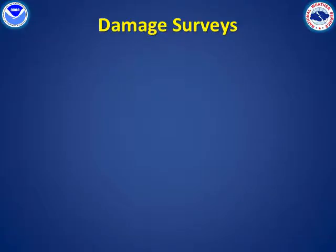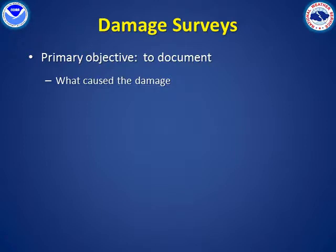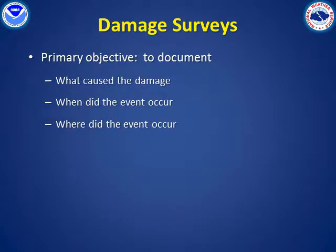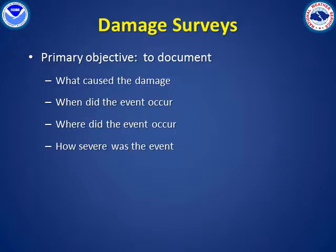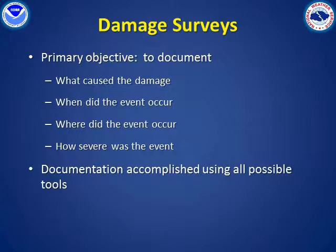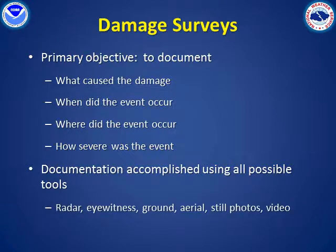The primary objective of a damage survey is documentation. First, we must determine what type of event, such as a tornado or downburst, caused the damage. We then need to determine specifics regarding the event, including when it occurred and what areas were impacted. Most importantly, the survey will determine how strong the event was — the enhanced Fujita or EF scale rating for tornadoes, and maximum wind speeds for straight wind events. This documentation is accomplished using all possible tools, including radar data, eyewitness reports, ground and aerial surveys, and photos and video of the event and resulting damage.